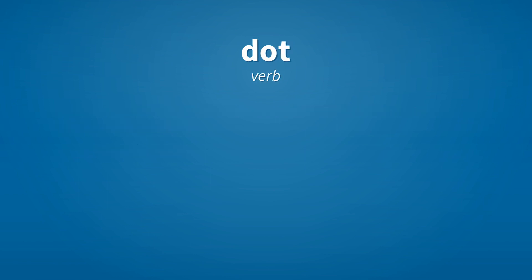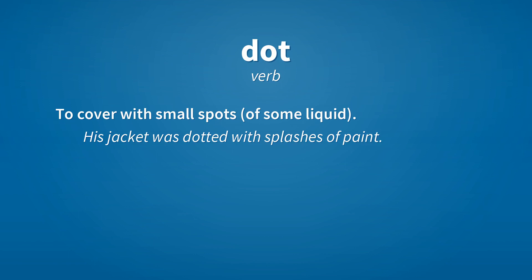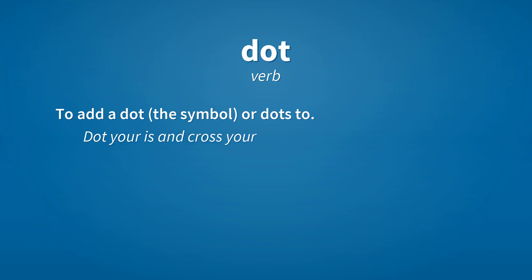A dot of a child. Verb. To cover with small spots — some liquid. His jacket was dotted with splashes of paint. Verb. To add a dot or dots to. Dot your i's and cross your t's.